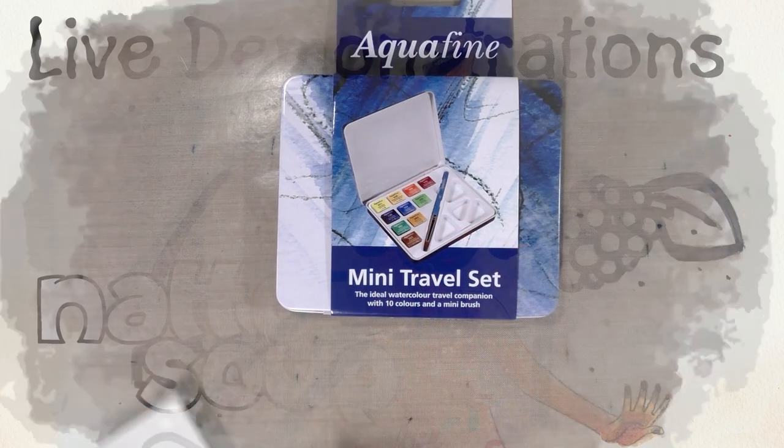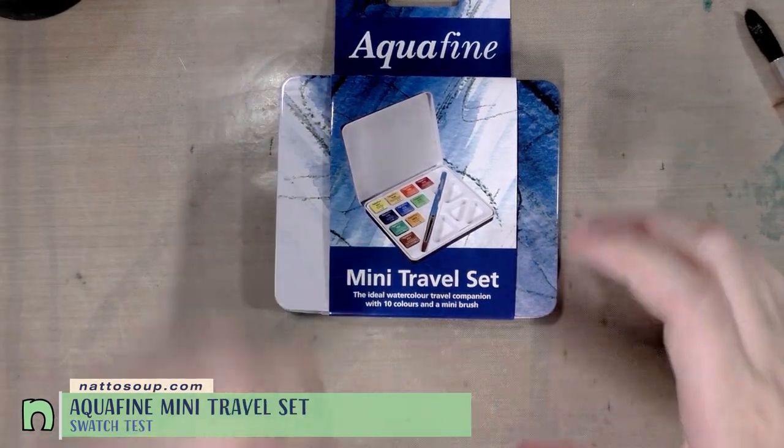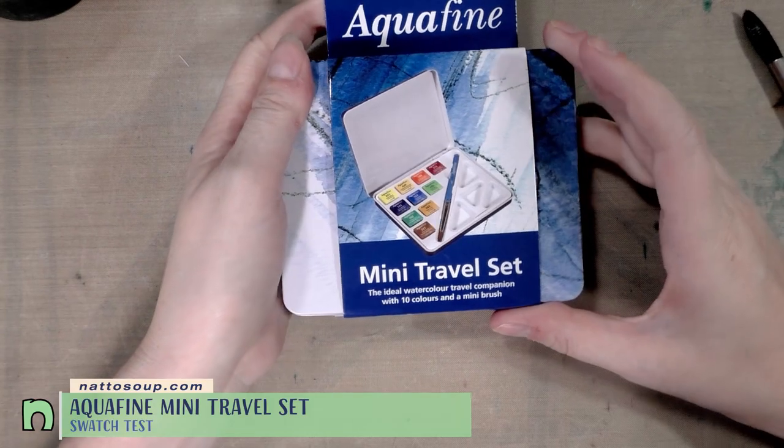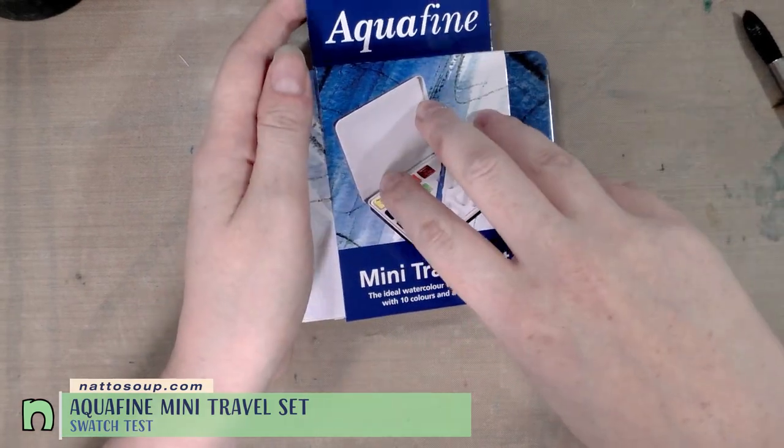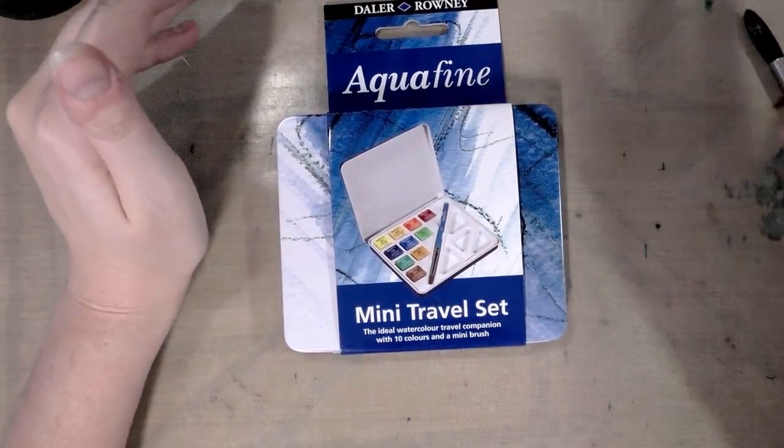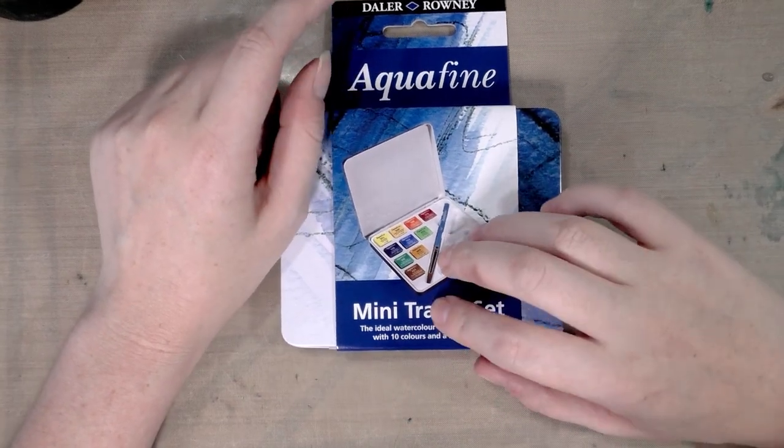Hey guys, I'm back with another affordable accessible watercolor review. Today we're taking a look at the Daler and Rowney Aquafine mini travel set. These are available in four different sets, including the donut set which is pretty ubiquitous. This one is a little bit less expensive, they're all $20 or below, and this was one of the cheaper of the sets.